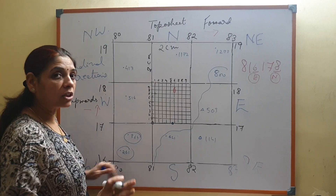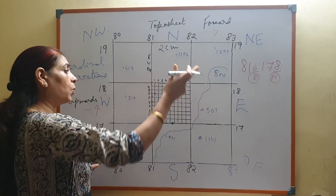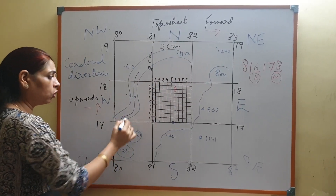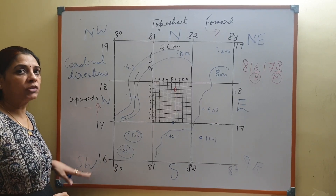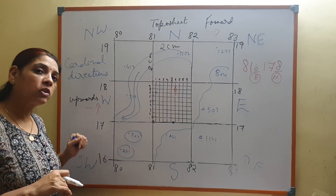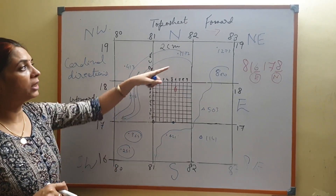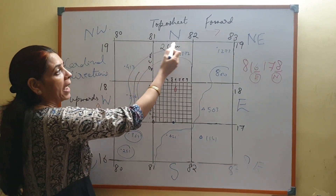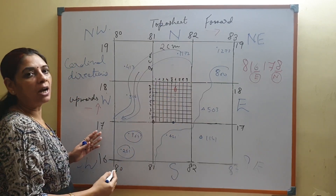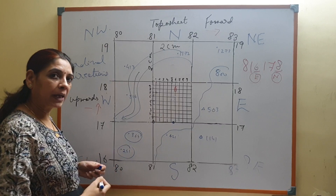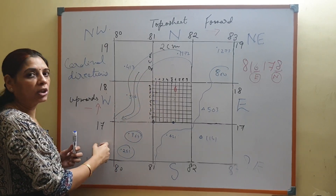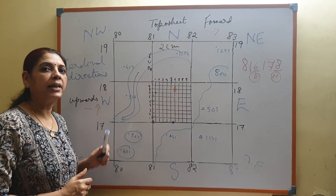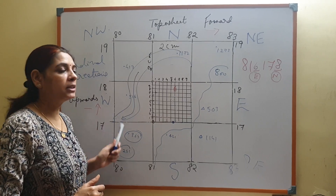The rivers on the topo sheet will also flow towards the south-west, because whichever direction the land slopes, the rivers flow towards that direction. This way you can also find out the direction of flow of the river. You will see the spot heights on the banks of the rivers, and you will come to know that whichever direction the spot heights become less, the river slopes towards that direction — because the land of that region will also slope towards wherever the spot heights, triangulated heights, and contour heights become less.